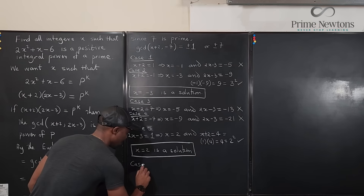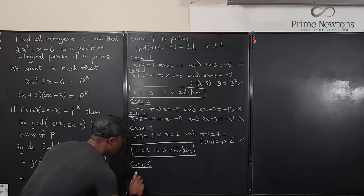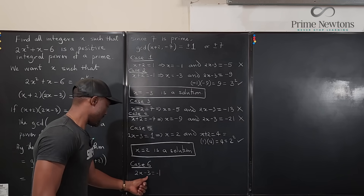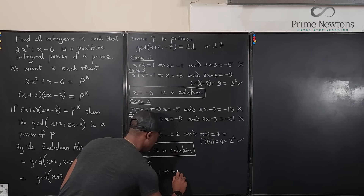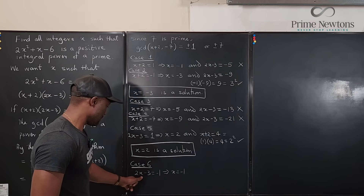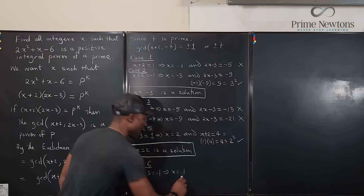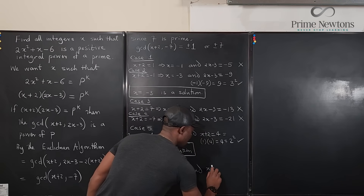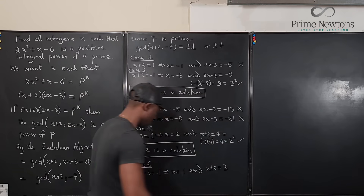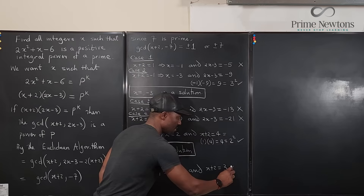Case 6: 2x−3 = −1, which implies x = 1. Then x+2 = 3. But we have a negative (−1) times a positive (3), which gives −3 — not a positive power of a prime. So x = 1 is not a solution.